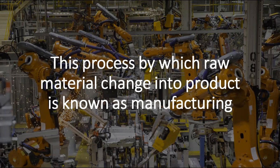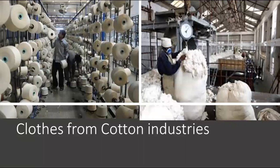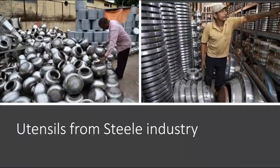Can you think of other examples of products which we use in our daily life that would have gone through the same process of manufacturing? Yes. One example can be the leather industry, which manufactures shoes, hats and purses. Cotton industries can be another example, which manufacture clothes. Utensils from the steel industry and other products made of steel are also examples.